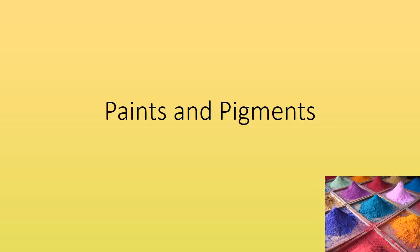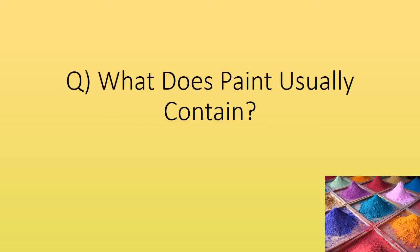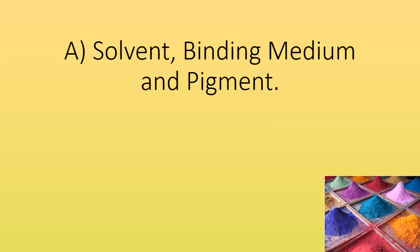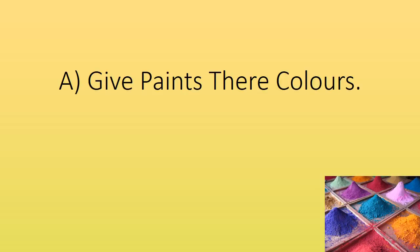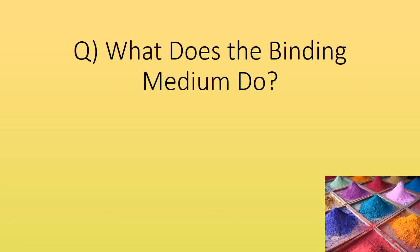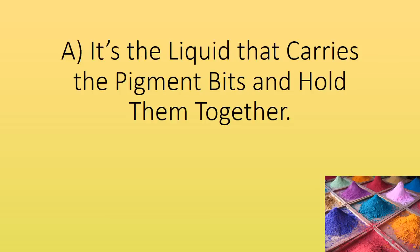Paint and pigments. What does paint usually contain? Solvent, binding medium and pigment. What do pigments do? Give paints their colour. What does the binding medium do? It's the liquid that carries the pigment and holds it together.